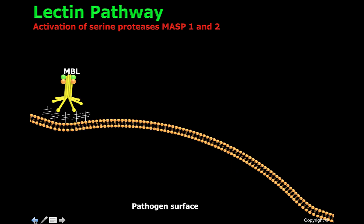Once MBL recognizes mannose patterns on the surface of pathogens, it will activate the serine protease 1, or MASP1, and MASP1 will activate the MASP2 serine protease.